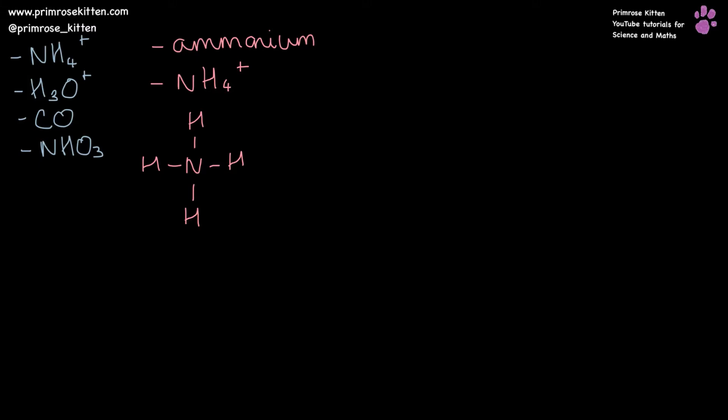When we draw ammonia, which is NH3, nitrogen has five electrons on its outer shell. And then hydrogen has one electron on its outer shell. And each contributes equally to this bond. But you'll see there's this pair of electrons up the top that aren't really doing very much.